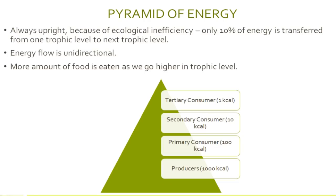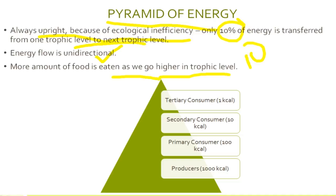The pyramid of energy is always upright because of ecological inefficiency. Only 10% of energy is transferred from one trophic level to the next. Energy flow is unidirectional, and because energy decreases as per the 10% rule, more food must be consumed as we go higher in the trophic level. For example, a tertiary consumer such as a lion needs more food to balance its energy.